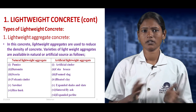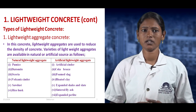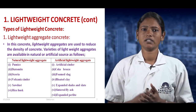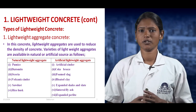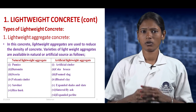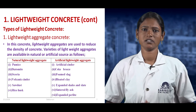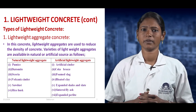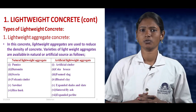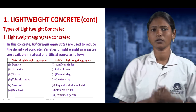In lightweight aggregate concrete, lightweight aggregates are used to reduce the self-weight. Lightweight aggregates are of two types: natural and artificial. Natural lightweight aggregates include pumice, dolomite, scoria, volcanic cinder, sawdust, and rice husk. Artificial lightweight aggregates include artificial clay, coke breeze, foamed slag, bloated clay, expanded shales, sintered fly ash, and expanded perlite. These aggregates reduce the density of the concrete.